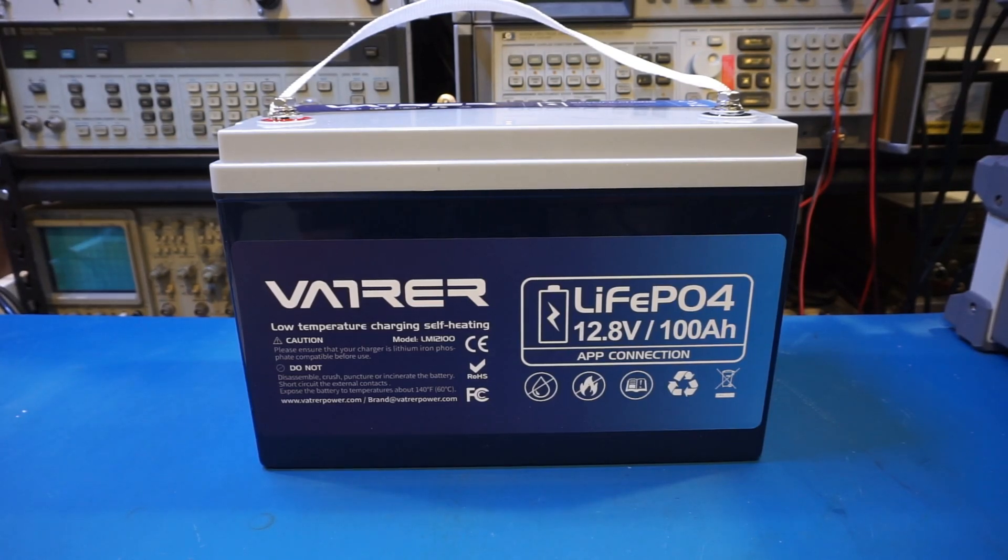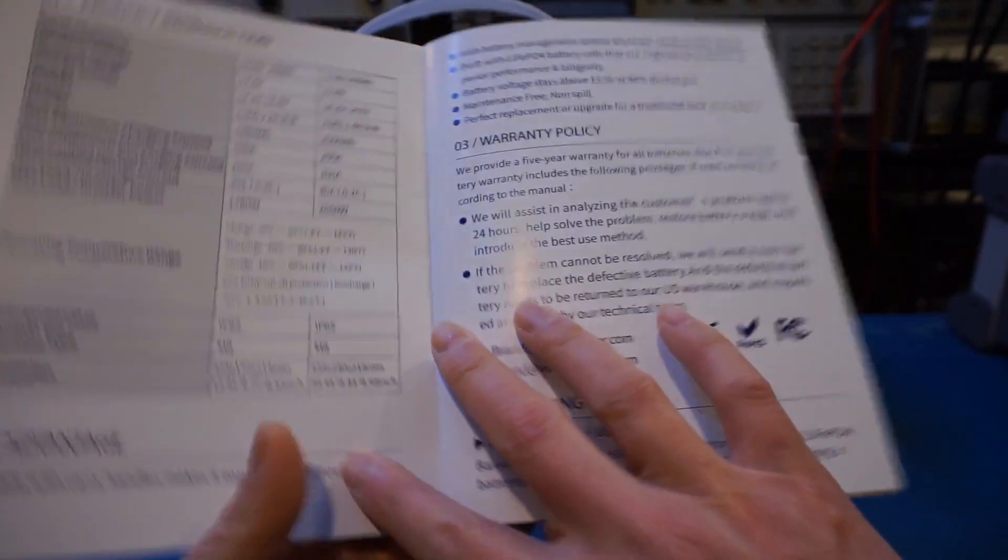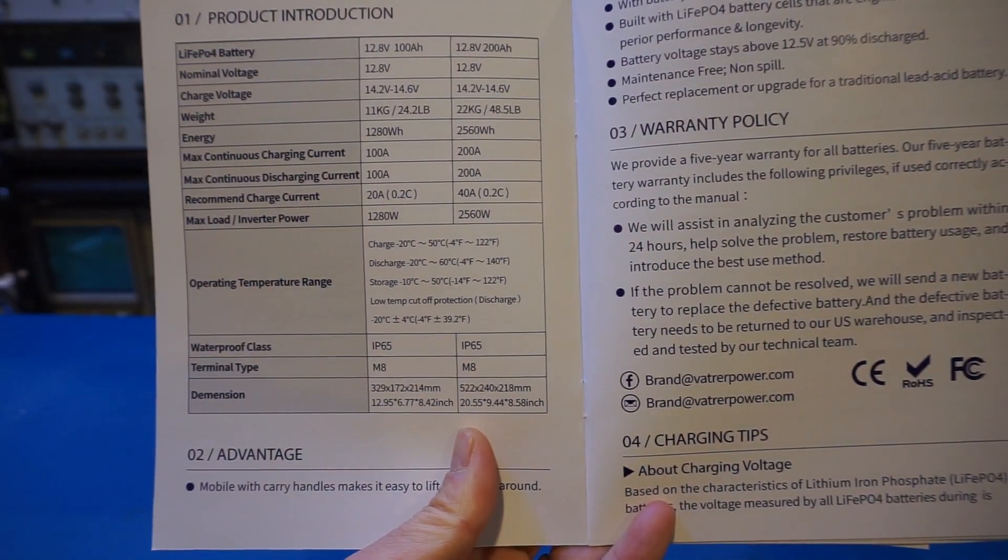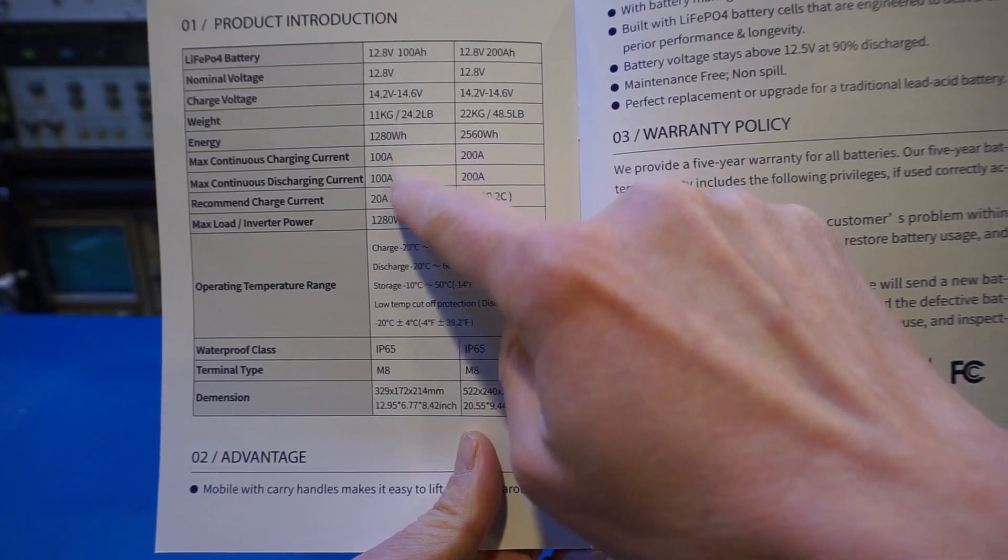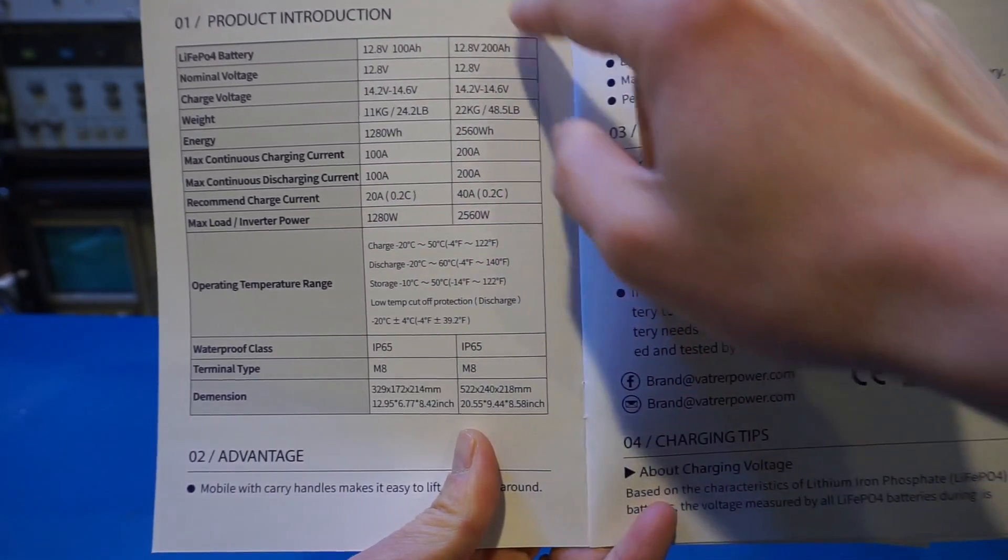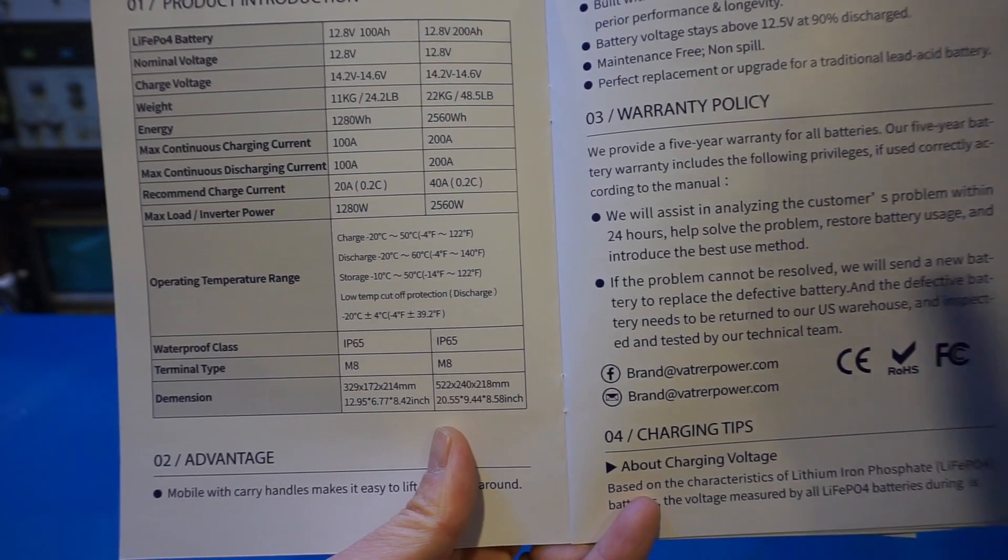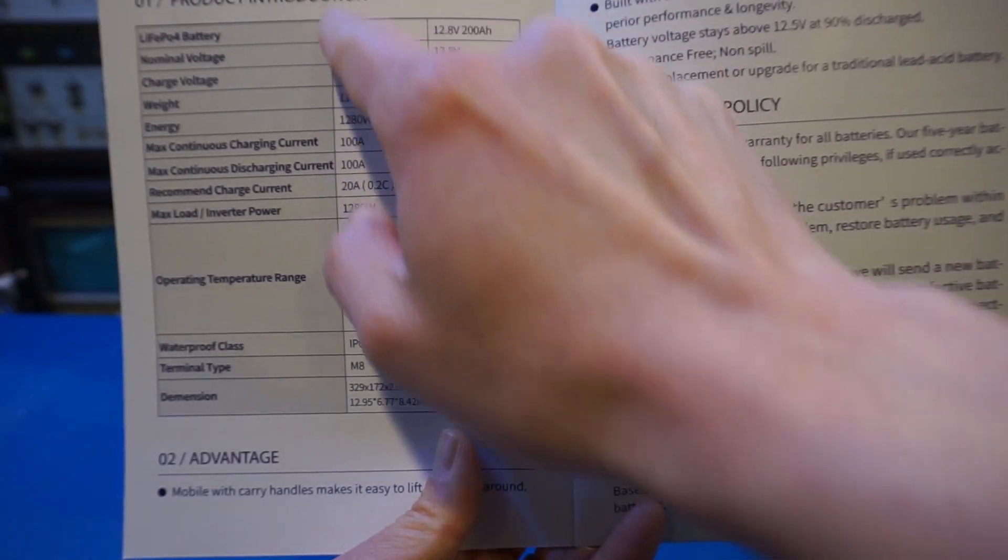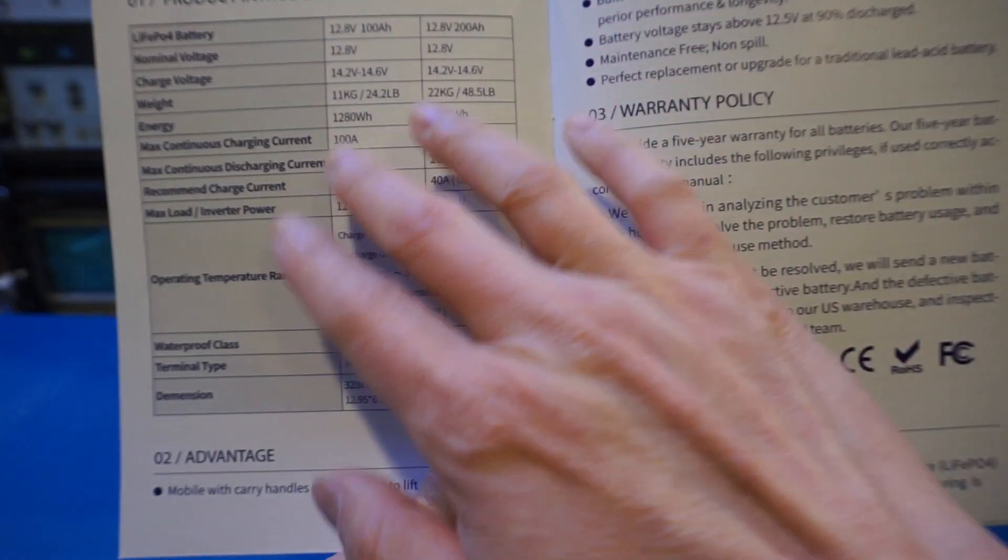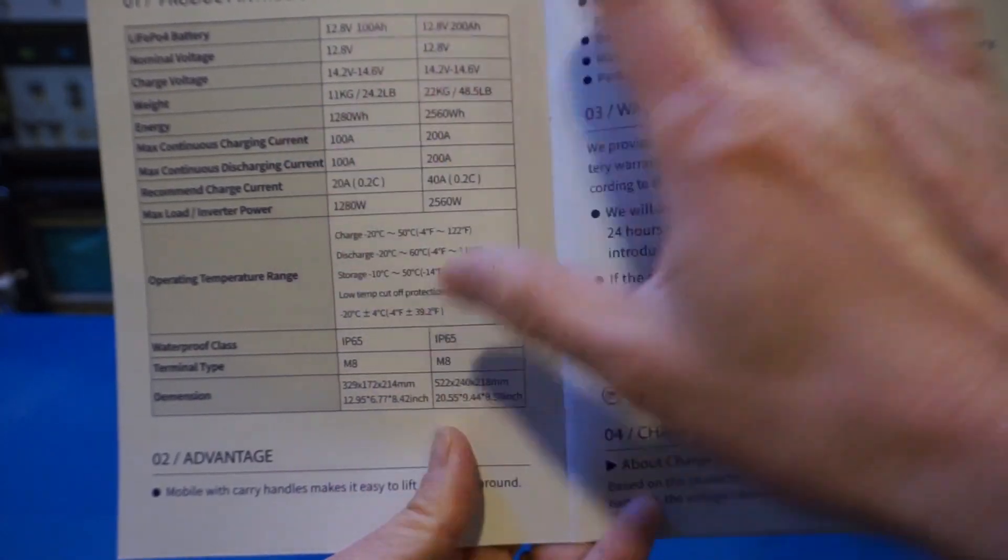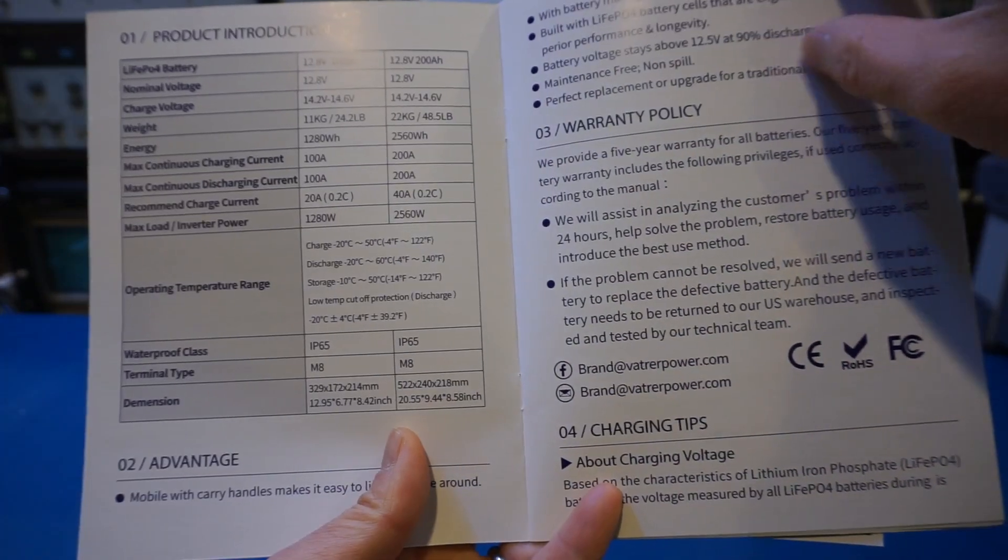Before we go any further, let's take a look at the supplied product menu. You can see that the maximum charging and discharging current here is rated at 100 amps for the 12 volt 100 amp hour battery. What is interesting is they didn't say anything about the maximum surge current capacity of the battery, so I guess we'll have to test it out later. And here we have the warranty policy and charging method.